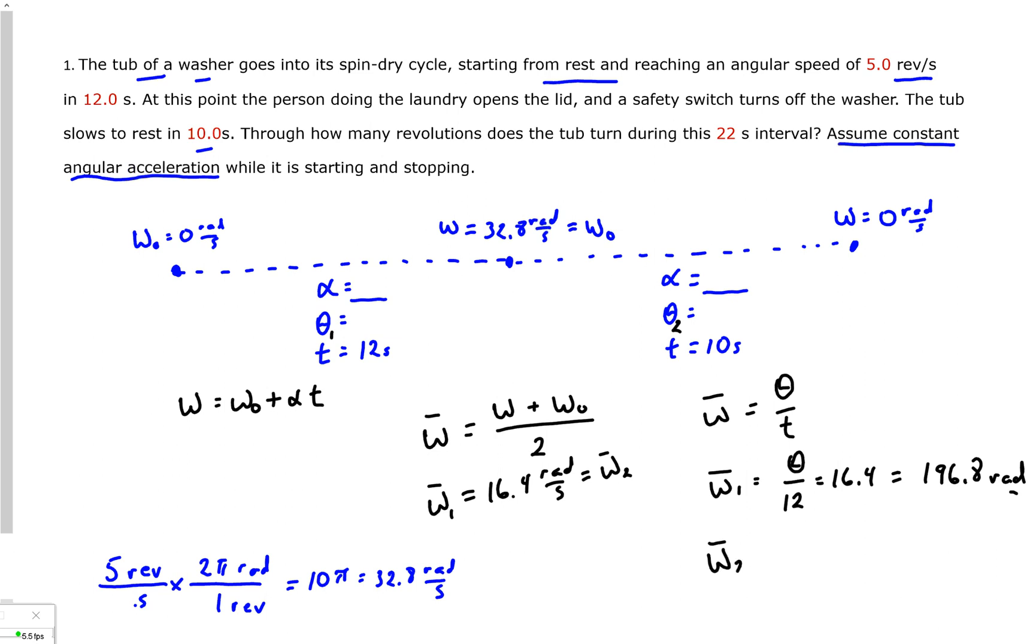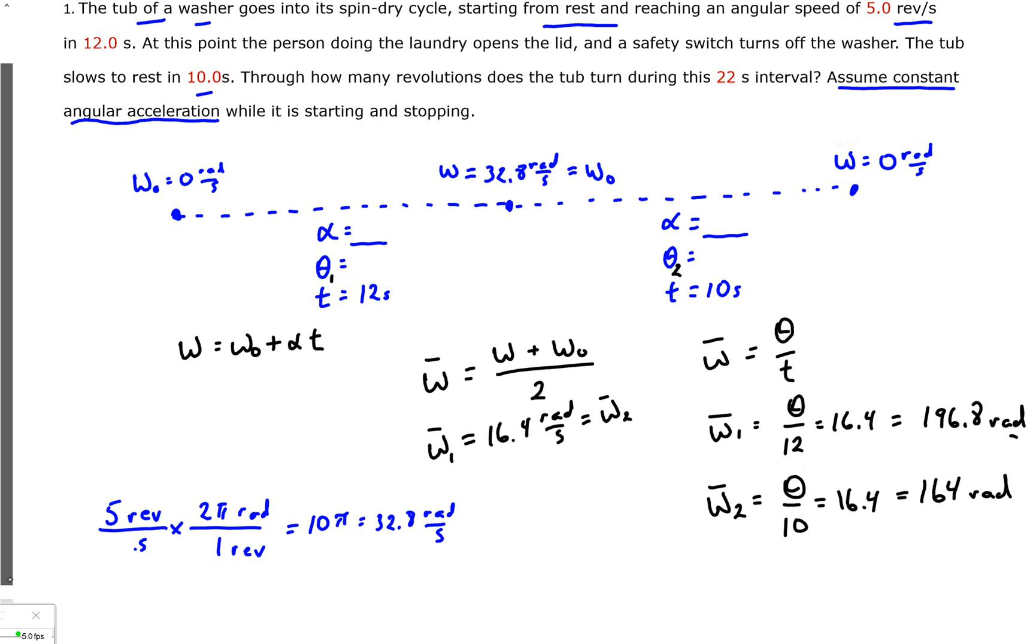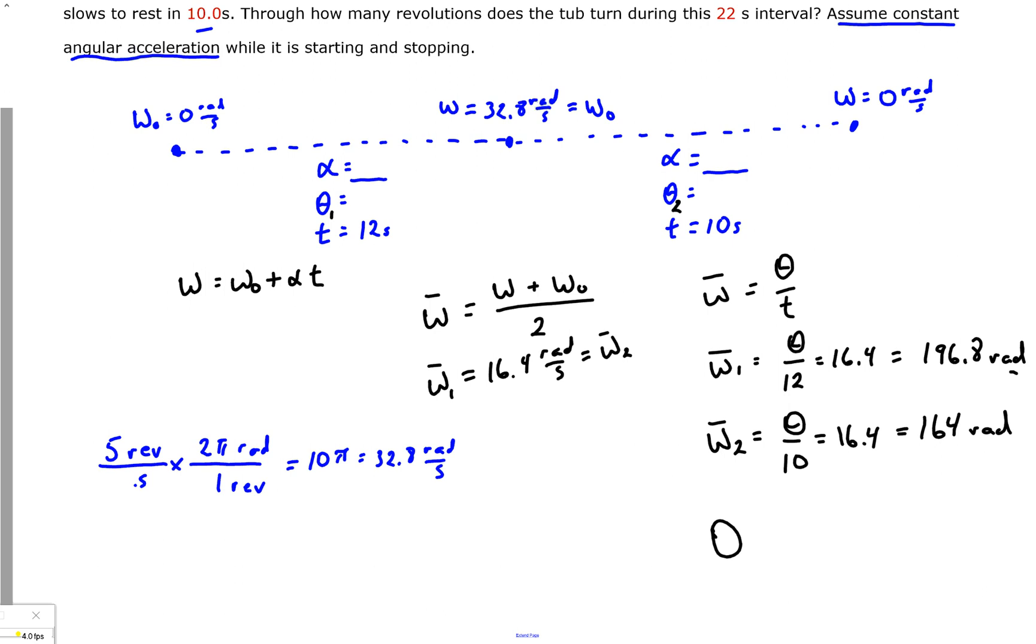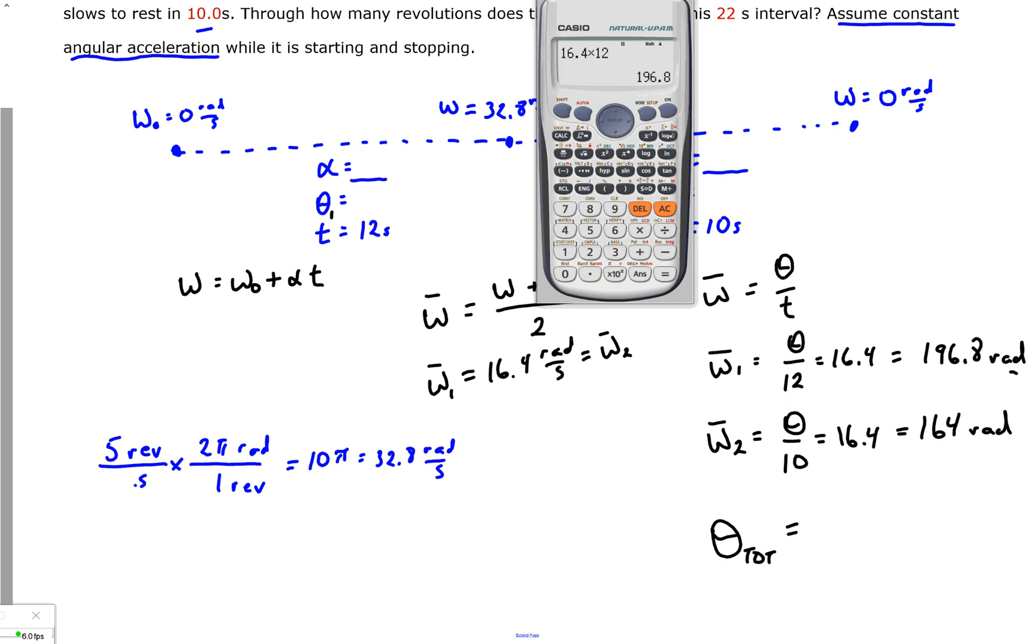And for part two, it's the same average angular velocity. So my theta for that part, I think we can handle that without a calculator. 10 times 16.4 is 164 radians. So what is the theta total for this? We'll just get the calculator back out. All we need to do is add 168. We've got 364.8.